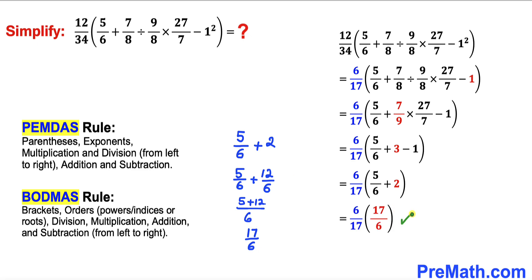As you can see in this next step I have replaced this whole thing inside this parentheses by 17 divided by 6. Now we can see that this 6 and 6 is gone, 17 and 17 cancel each other out, so everything reduces to simply 1.